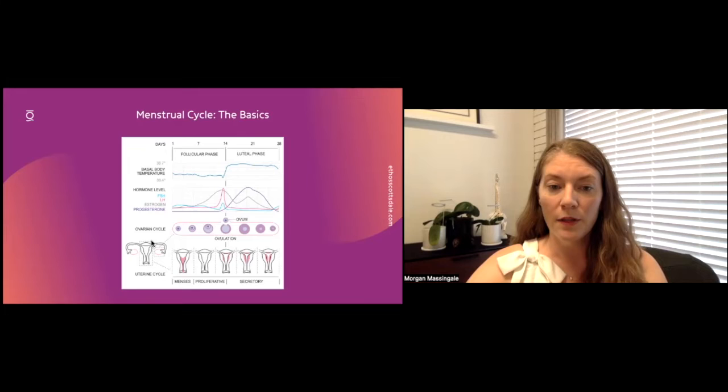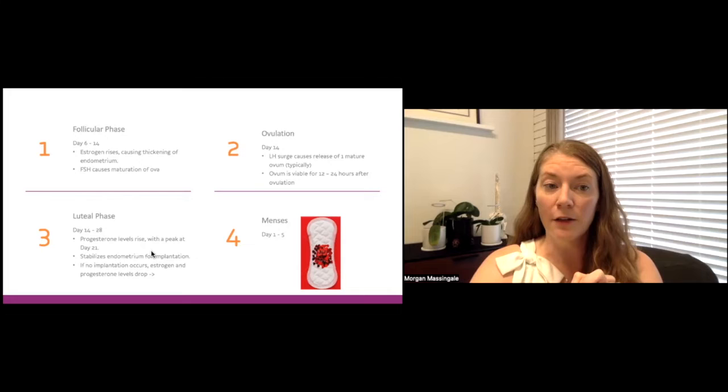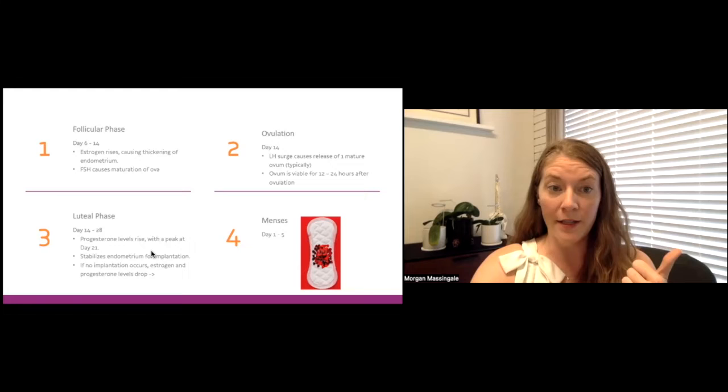So let's talk about the different phases. We all kind of think of menses as the end of our menstrual cycle, but it is actually the beginning. It's days one through five-ish for the average woman. From there, we go into the follicular phase, which is typically day six through 14. What's happening during this phase, your estrogen should be rising, which actually causes the lining of your uterus to become thicker.